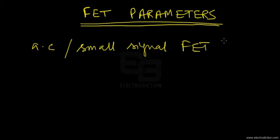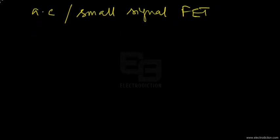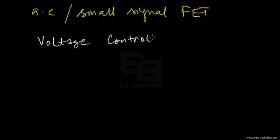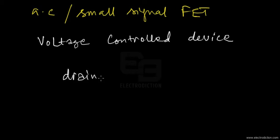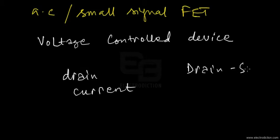We'll start from the fact that the FET is basically a voltage controlled device. The question that arises at this point is: what does it control? Does it control the output current — that's the drain current — or does it control the output voltage, which is the drain-to-source voltage?